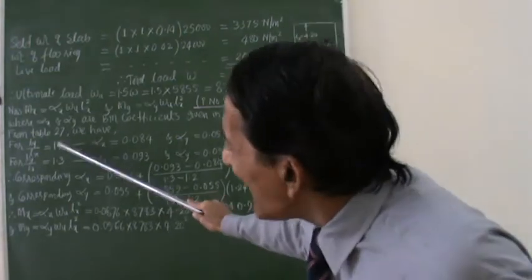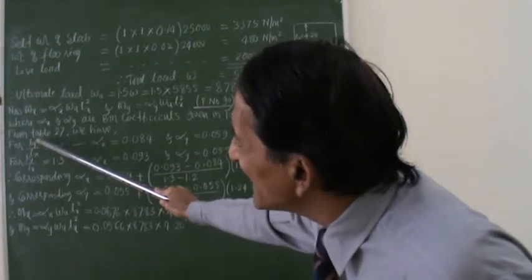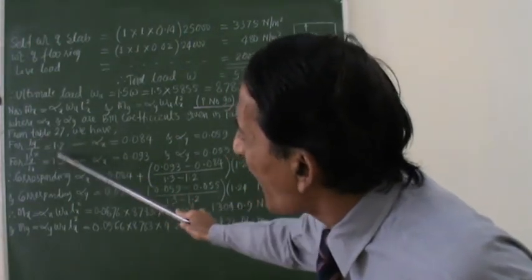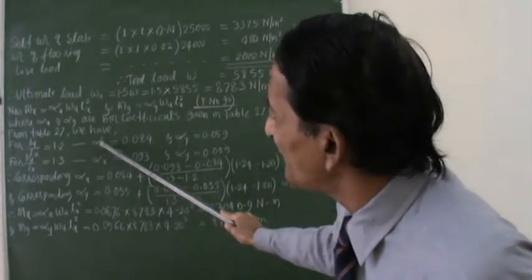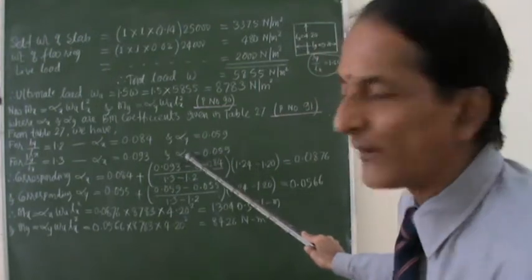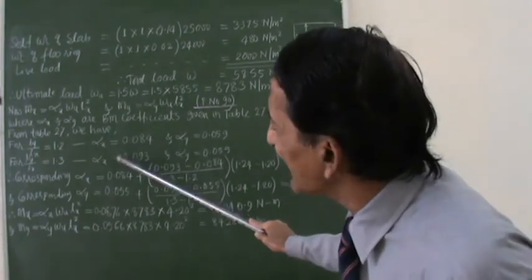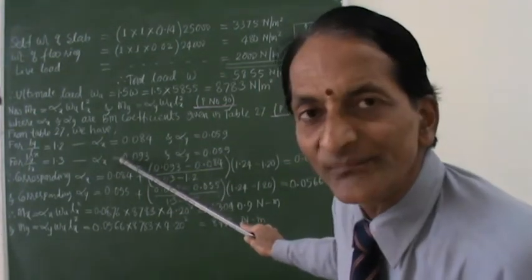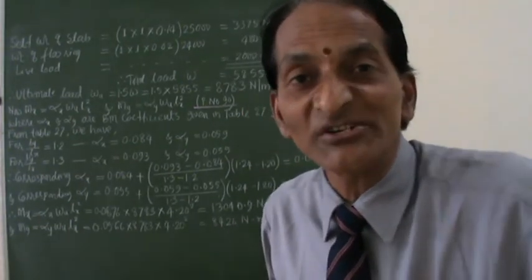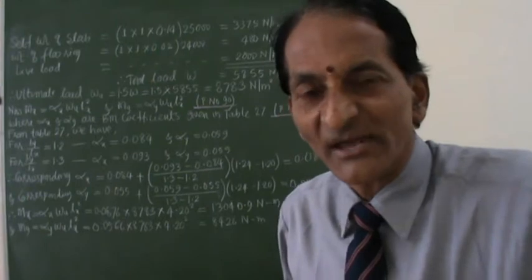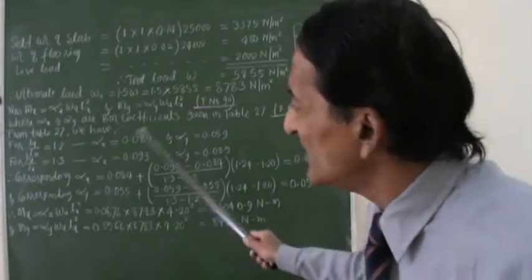Now I want, when the LY by LX value is 1.24, which lies in the between, what is the value of alpha X and what is the value of alpha Y? It can be calculated by interpolation, just what we did in our beams chapter. Check for shear. Do you remember it? Check for shear. We have done interpolation.